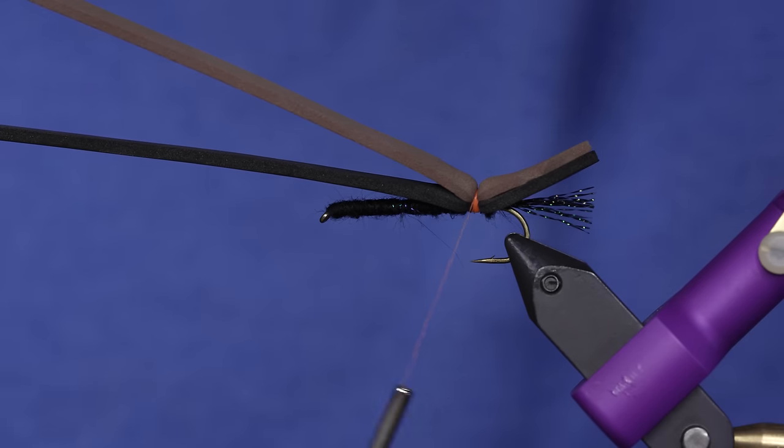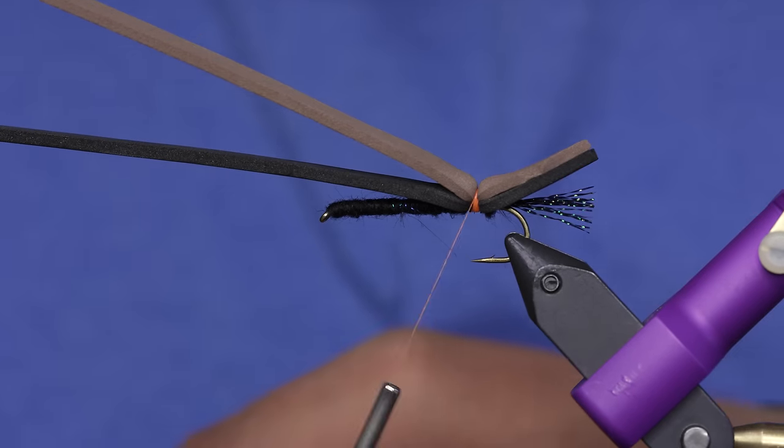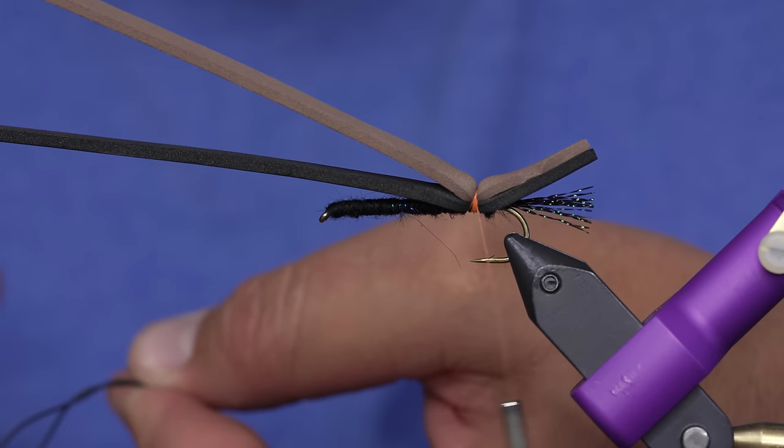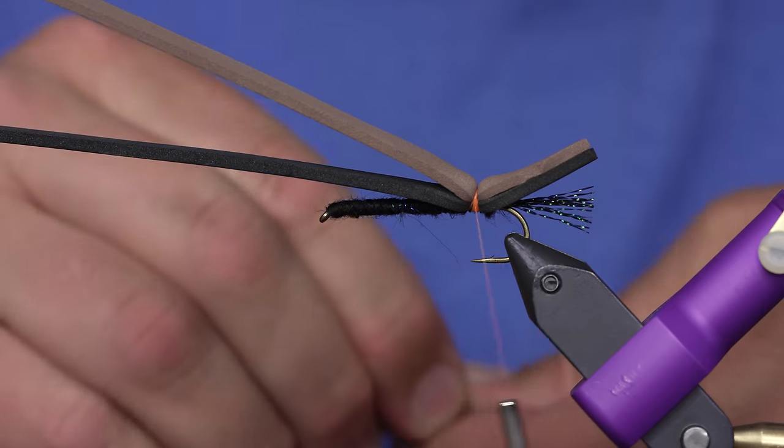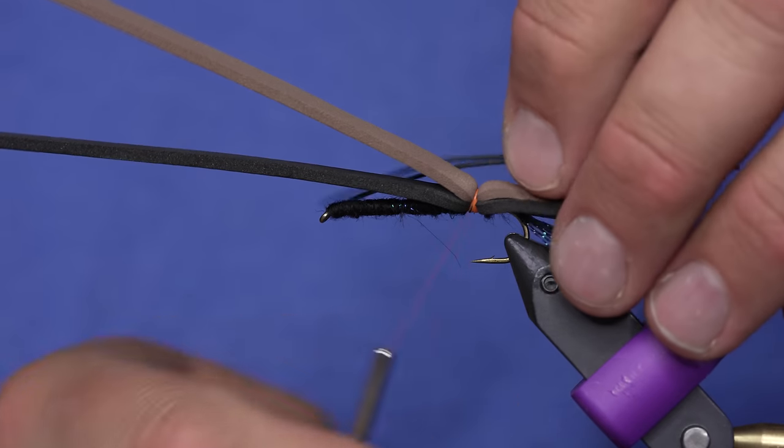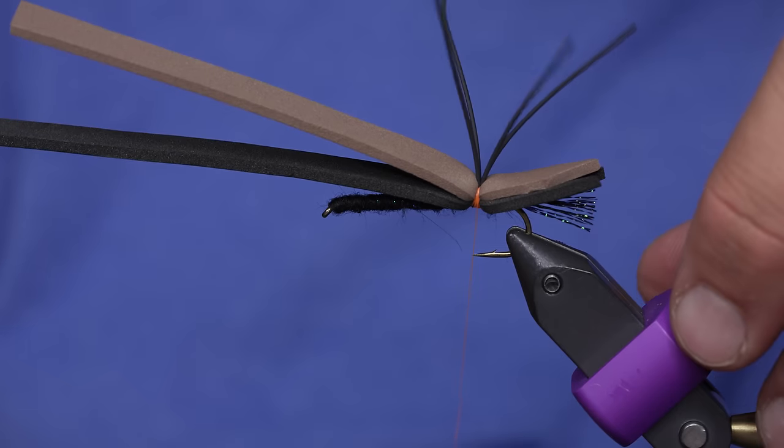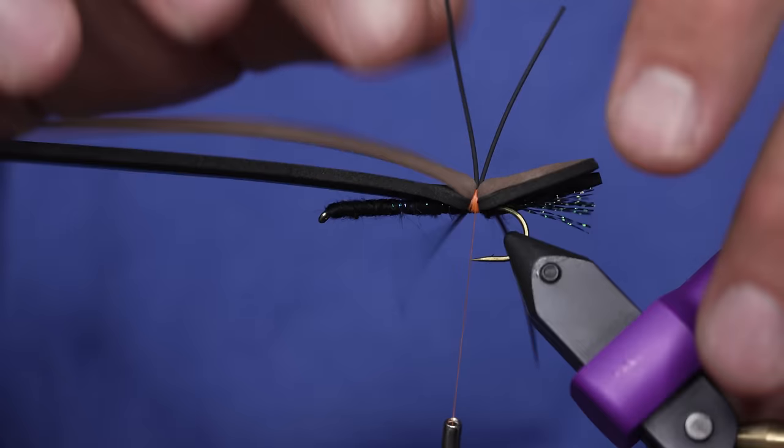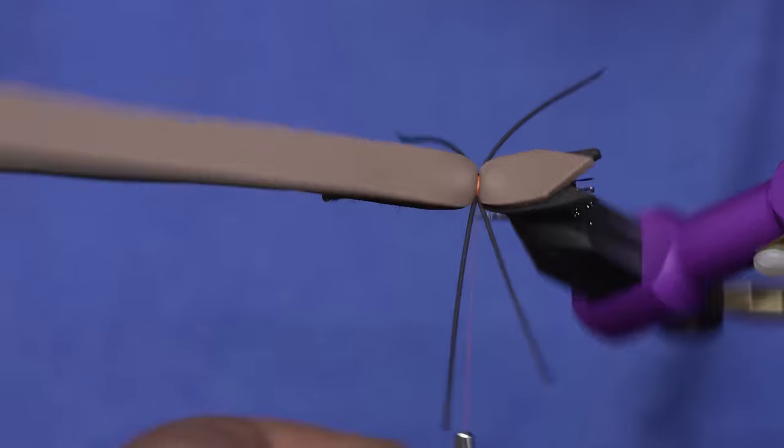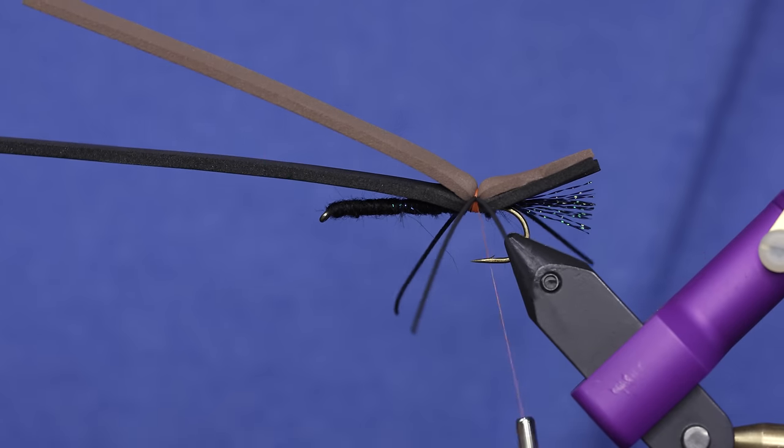So I'm just going to take generic black rubber legs, just regular old medium round rubber. Take two legs. You've seen me tie in rubber legs a bunch of different ways. I'm just going to tie them both on top, pull one to one side, one to the other, and boom, we have legs on our chubby.